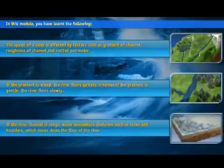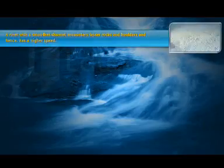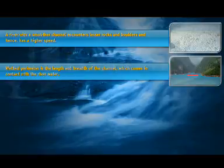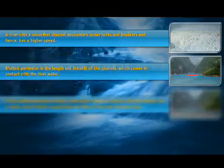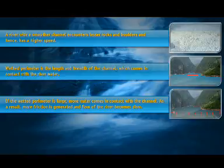If the river channel is rough, water encounters obstacles such as rocks and boulders, which slow down the flow of the river. A river with a smoother channel encounters lesser rocks and boulders and hence has a higher speed. Wetted perimeter is the length and breadth of the channel which comes in contact with the river water. If the wetted perimeter is large, more water comes in contact with the channel. As a result, more friction is generated and flow of the river becomes slow.